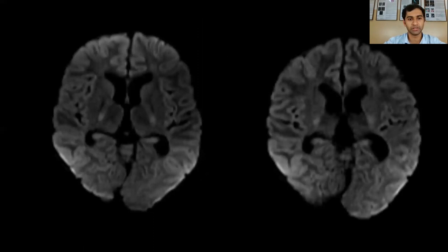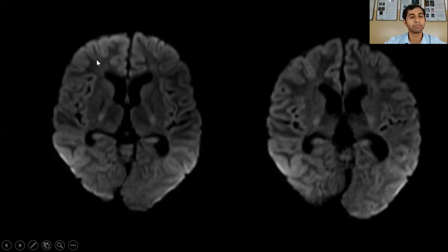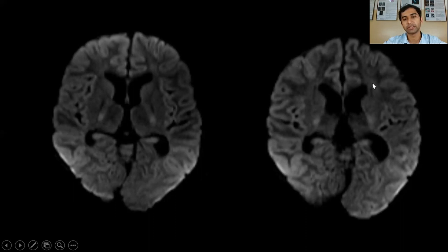This is another case of a 16-year-old male patient with a history of status epilepticus. The initial imaging showed areas of hyperintensity on the DWI image. The follow-up imaging done 4 days later shows that these hyperintensities have disappeared.